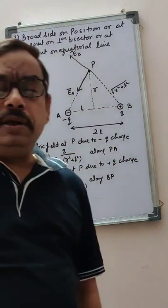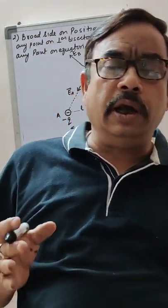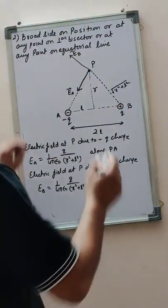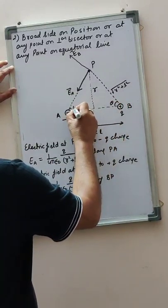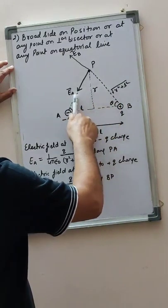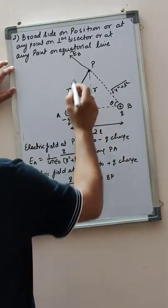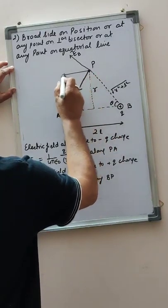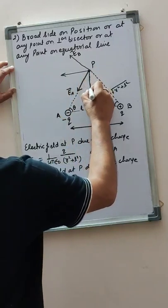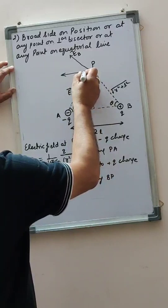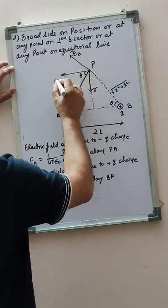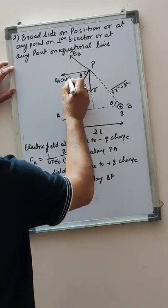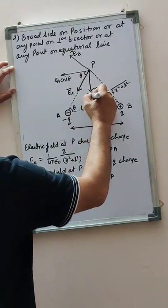Now these two fields are neither in the same direction nor in opposite direction, nor are they perpendicular, so we will resolve these two fields. Let us suppose this angle is theta, so this angle is also theta, because this is the perpendicular bisector — two sides are equal, opposite angles are equal. The component containing angle theta is written with cosine, so this will be Ea cos theta and this will be Ea sin theta.